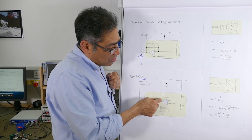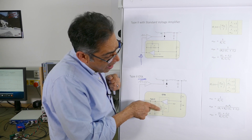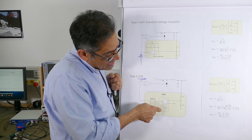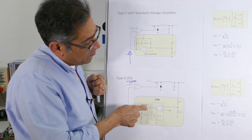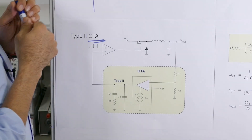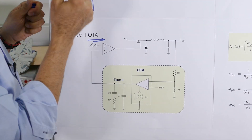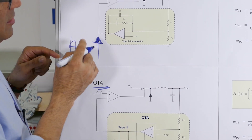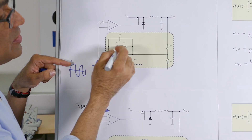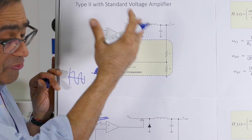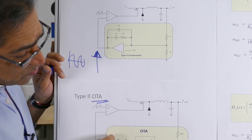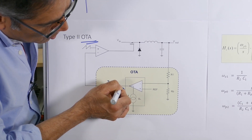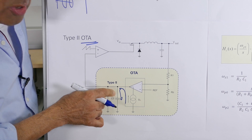Now many textbooks and application notes draw two circles down there. I have put the current source here so that you can see how the current is going to flow. Whilst on a standard voltage amplifier you have a voltage here and as this voltage changes these components compensate and give it a frequency response. On this one, if you imagine we have got a current that's going to come out of there and it's going to go down these components.